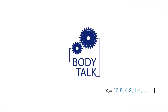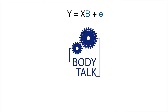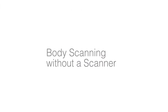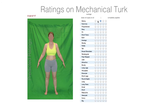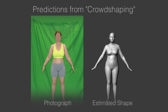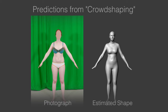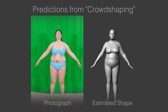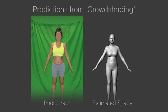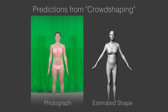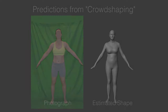We learn a simple linear model to progress from ratings to body shape coefficients. BodyTalk uses this words-to-shape model to estimate body shape with surprising accuracy. With this simple model, we can now create human avatars without a scanner. Given a photograph of a person, we ask 15 people to rate the body shape using the words, predict the shape coefficients using the BodyTalk model, and then reconstruct the 3D body shape using the principal components. We call this method for estimating shape from crowdsourced ratings crowd shaping.